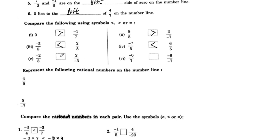When the negative sign is in either numerator or denominator, the rational number is negative. The numbers negative 2 by negative 3 - the numerator and denominator are the same sign, so it is equal. Now consider negative 6 by 7 and negative 6 by negative 7.